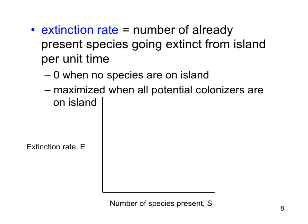Extinction rate, on the other hand, is the number of already-present species on the island going extinct per unit time. When there are no species on the island, none can go extinct, so the rate starts at zero. When all possible species in the system are present on the island, that maximizes the probability that one goes extinct. This is also drawn as a curvilinear relationship.